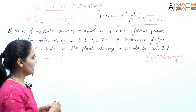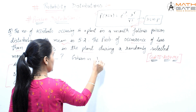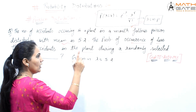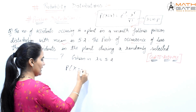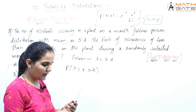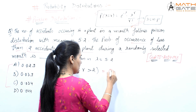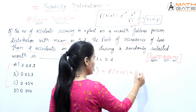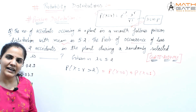Let's solve. Given: mean equals lambda equals 5.2. We need to find probability where x equals r, which is less than two. That means we need to find probability at x equals zero, plus probability at x equals one. Both of these we need to find out.